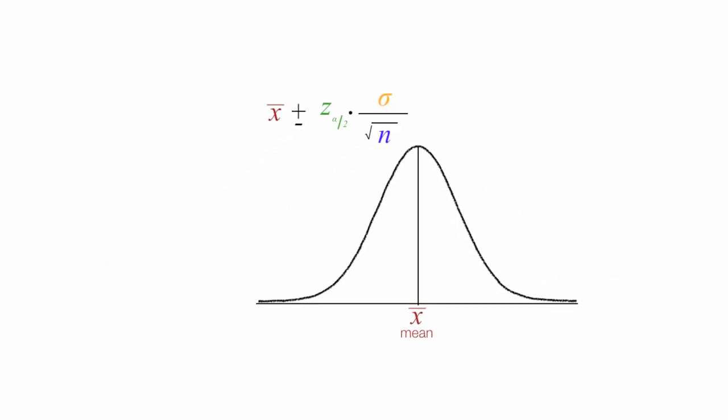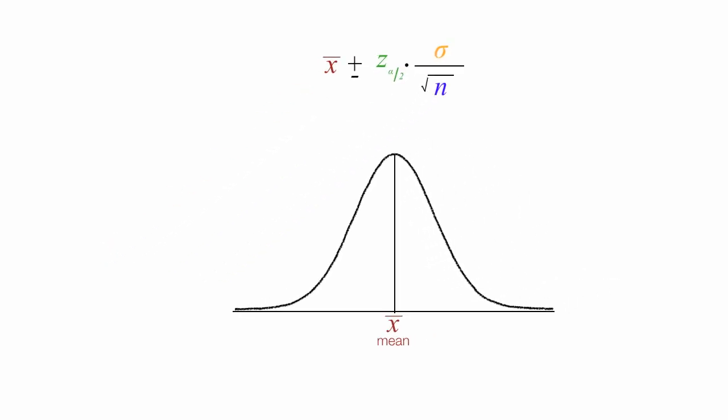It turns out this equation can be broken down into two separate equations. One with the plus sign, and the other with the minus sign. So we have the mean plus the margin of error. And the mean minus the margin of error.